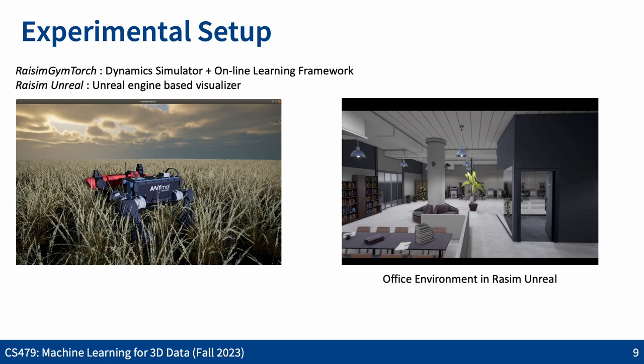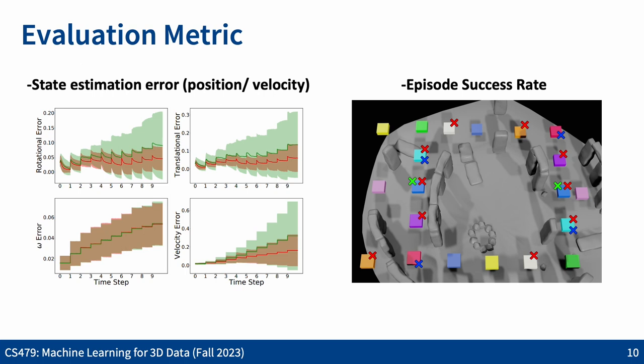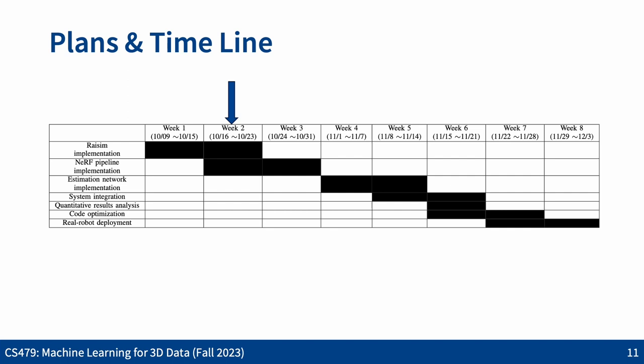The entire process is conducted within the RaiSim framework with an Unreal-based visualizer, enabling us to acquire image data for NeRF training within RaiSim and construct PyTorch-based online learning code using RaiSim-Torch. We anticipate the primary improvement to be in state estimation performance, using state estimation error as a performance metric. By comparing success rates of entire scenarios, we aim to demonstrate that improving state estimation is beneficial for the overall online process. Thank you for your attention.